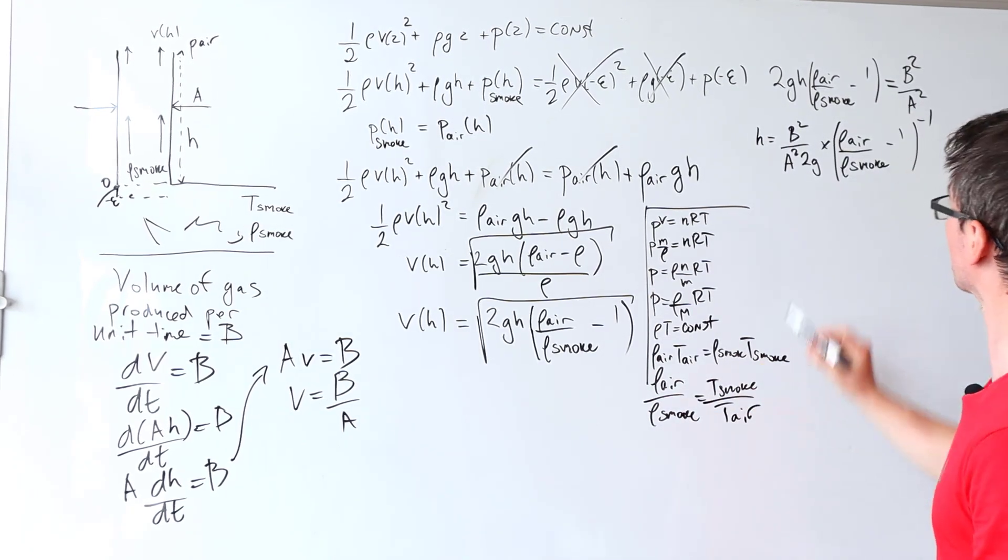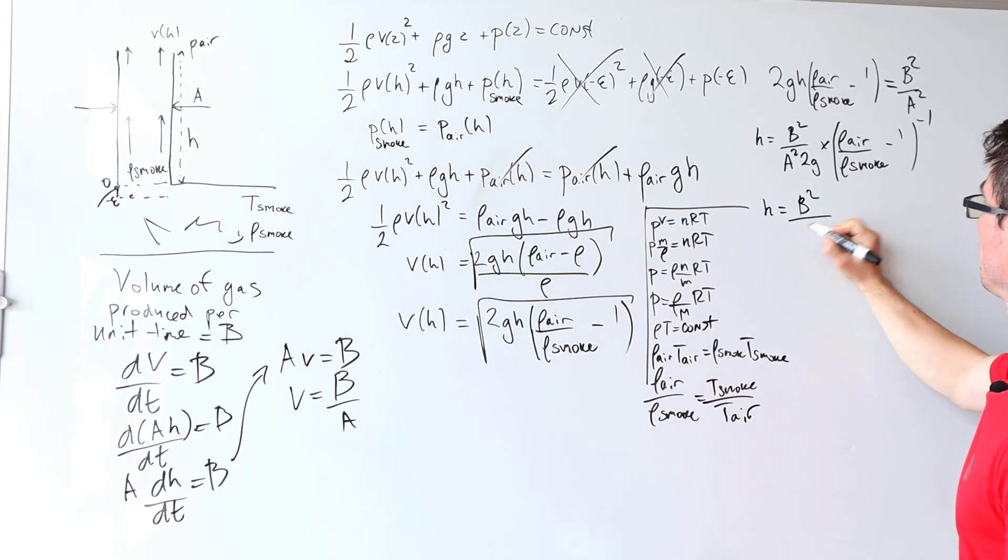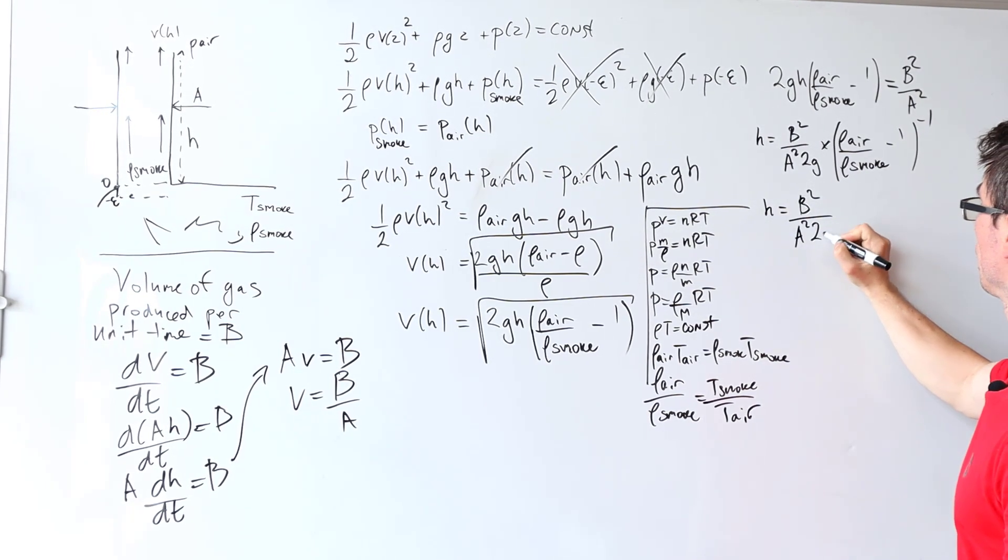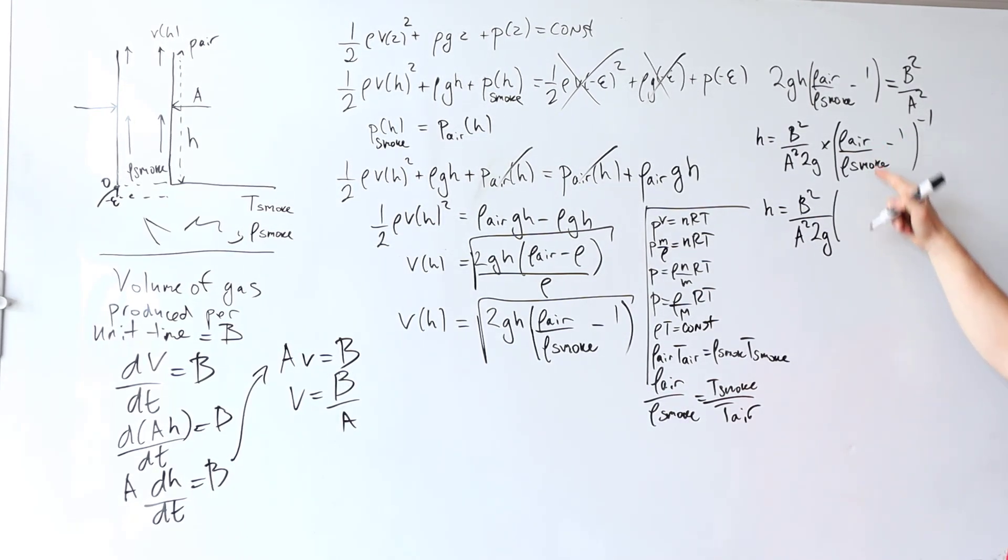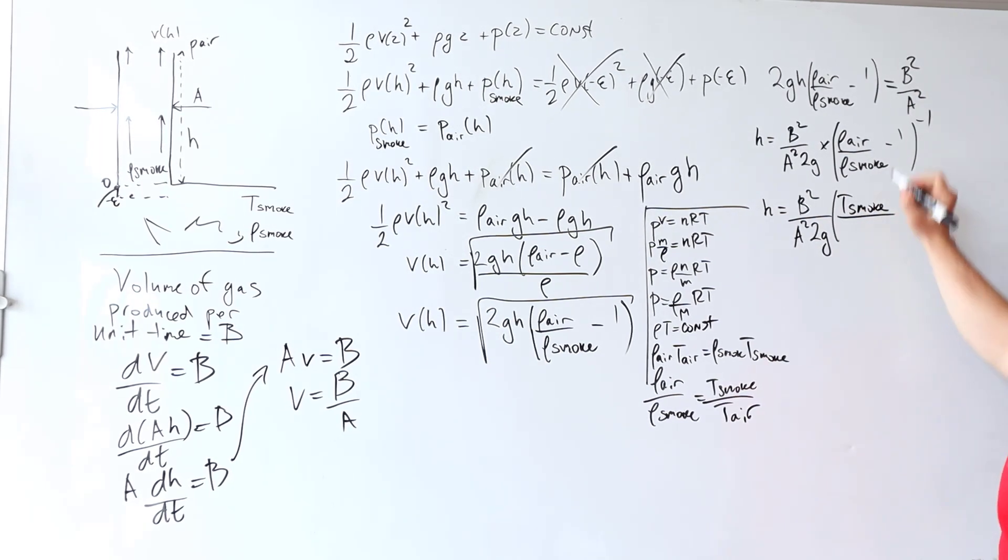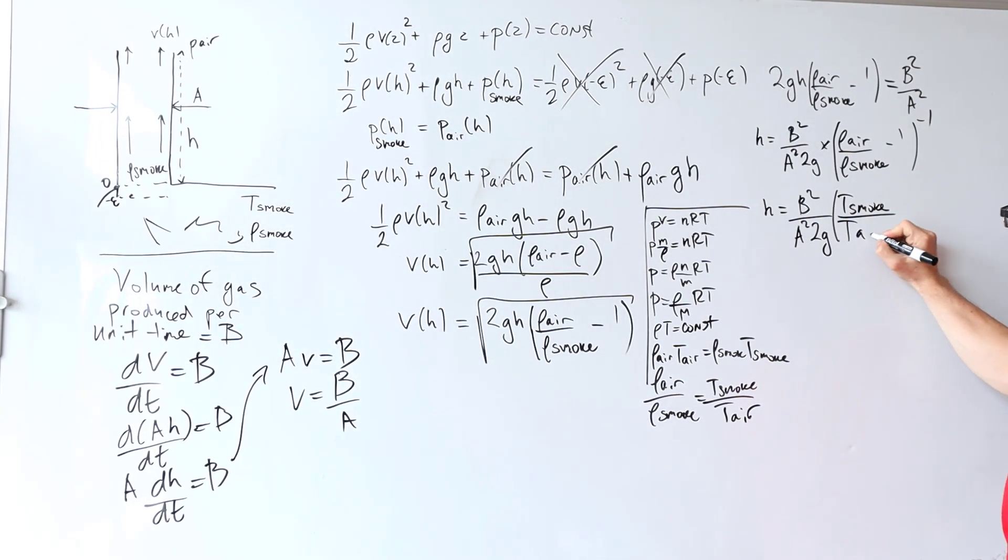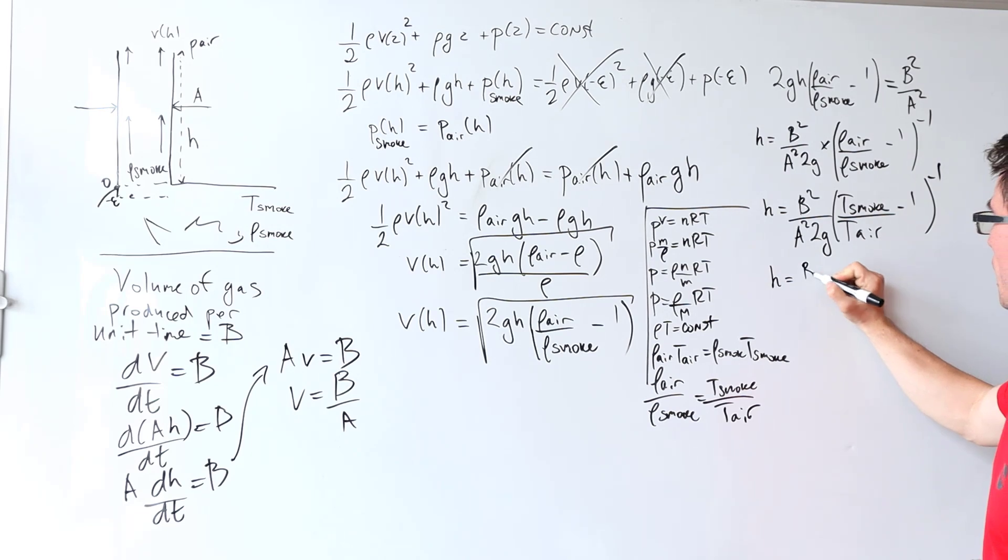Okay, well this over that is equal to that, therefore this means that h will be given by b squared over a squared 2g, rho air over rho smoke is just T smoke over T air take away 1. Okay, now let's actually play a little bit around with the algebra, so what we get is that h is b squared over a squared 2g multiplied by T smoke take away T air divided by T air raised to the power of minus 1.